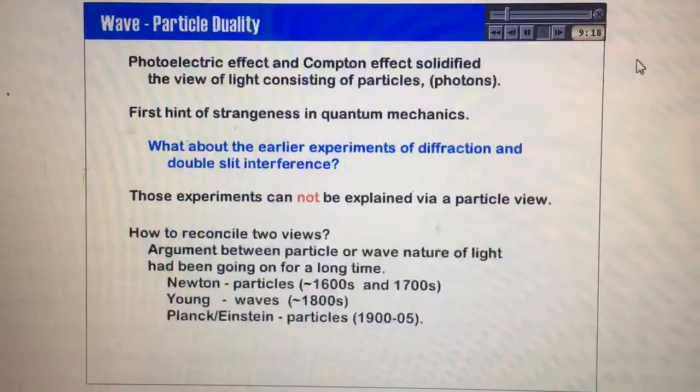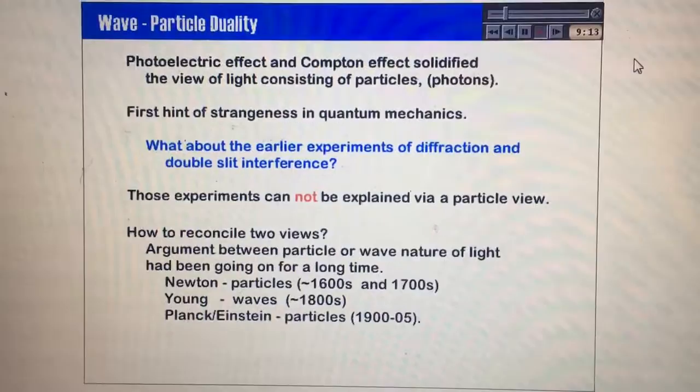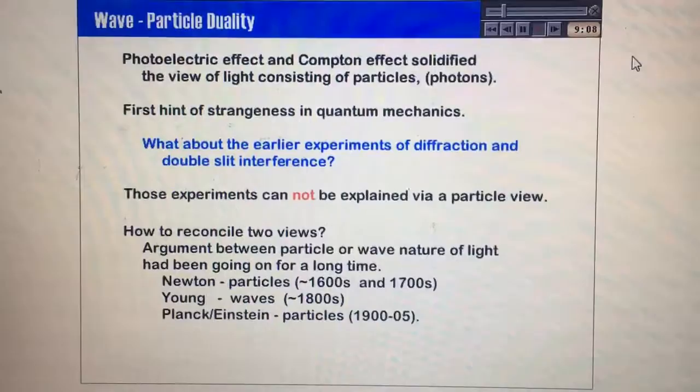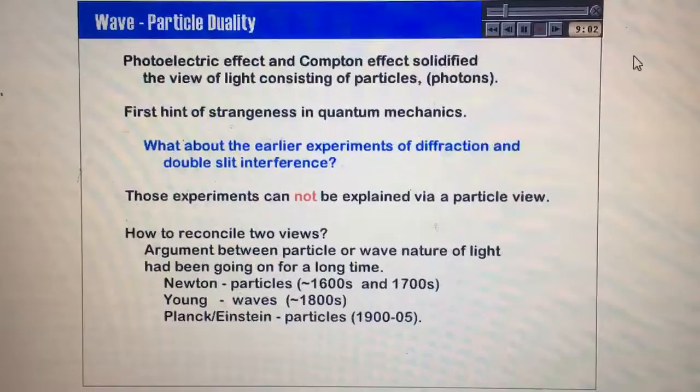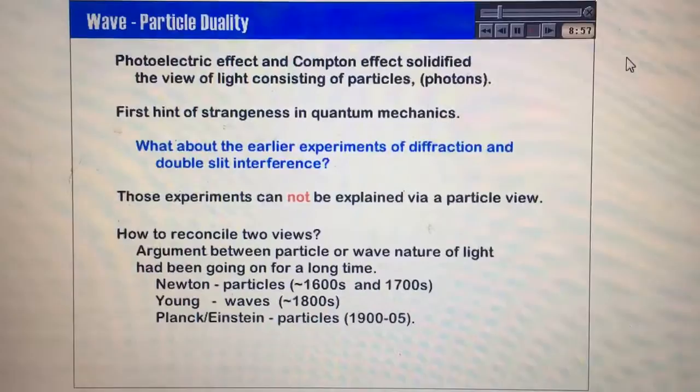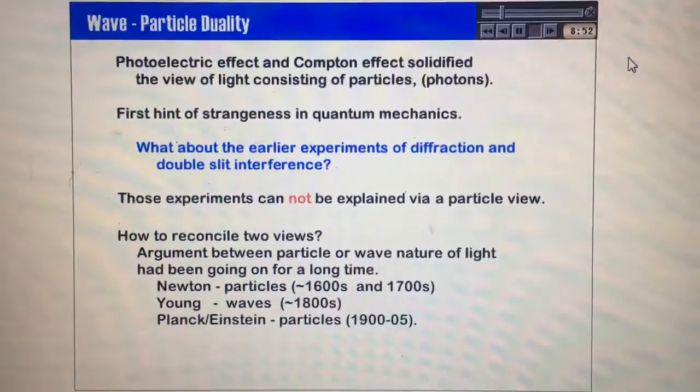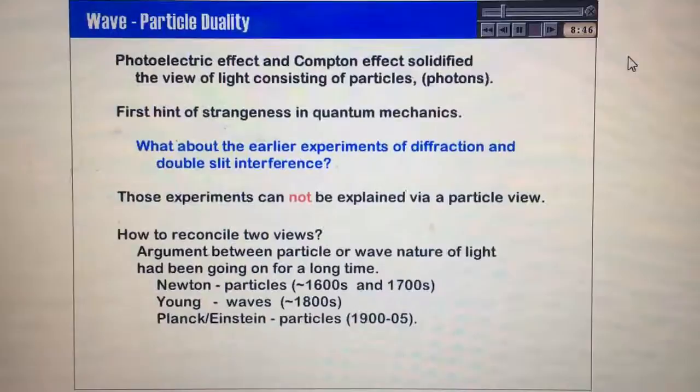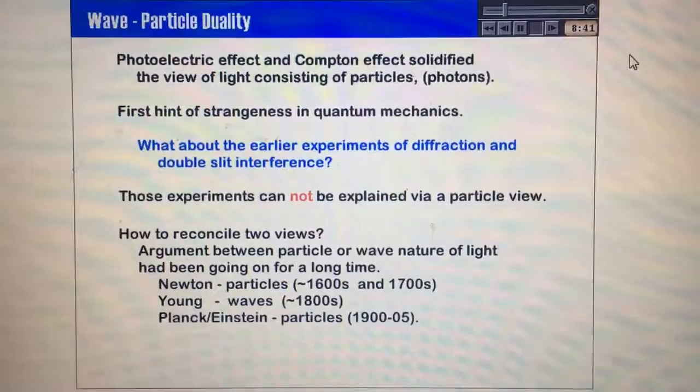Well, the argument between particle and wave nature of light had been going on for a long time. This is nothing new at this point, but the result is novel. Newton originally had the idea that photons were particles. And he did have some experiments which led toward wave nature of light. However, his own beliefs were as particles. Others at the time thought they were waves. Later on, Young and others showed that via the diffraction interference experiments that we must treat light as waves. And that was the dominant viewpoint throughout the 1700s and 1800s.